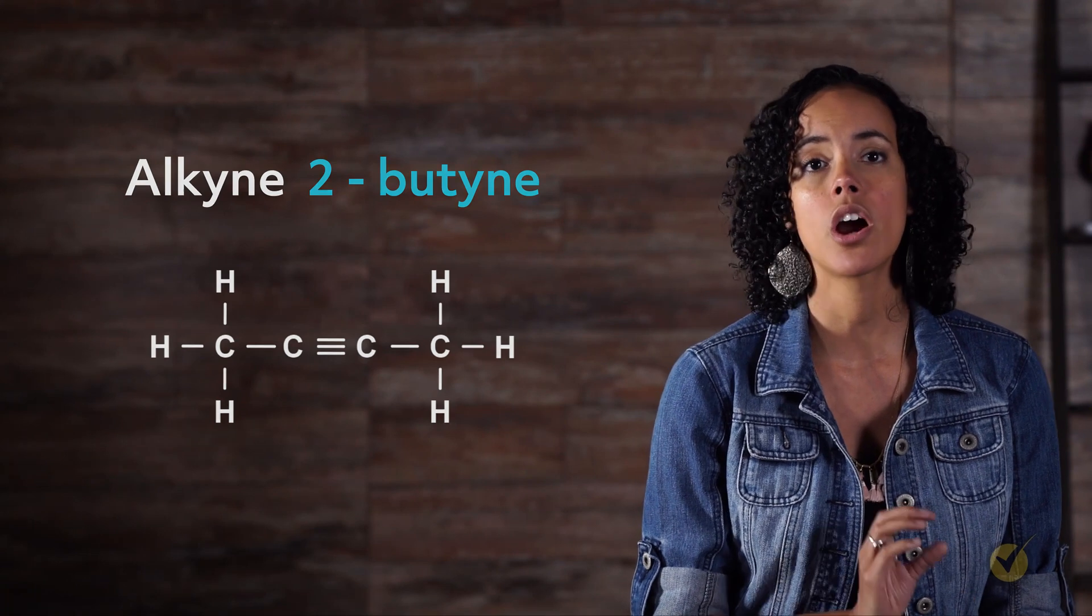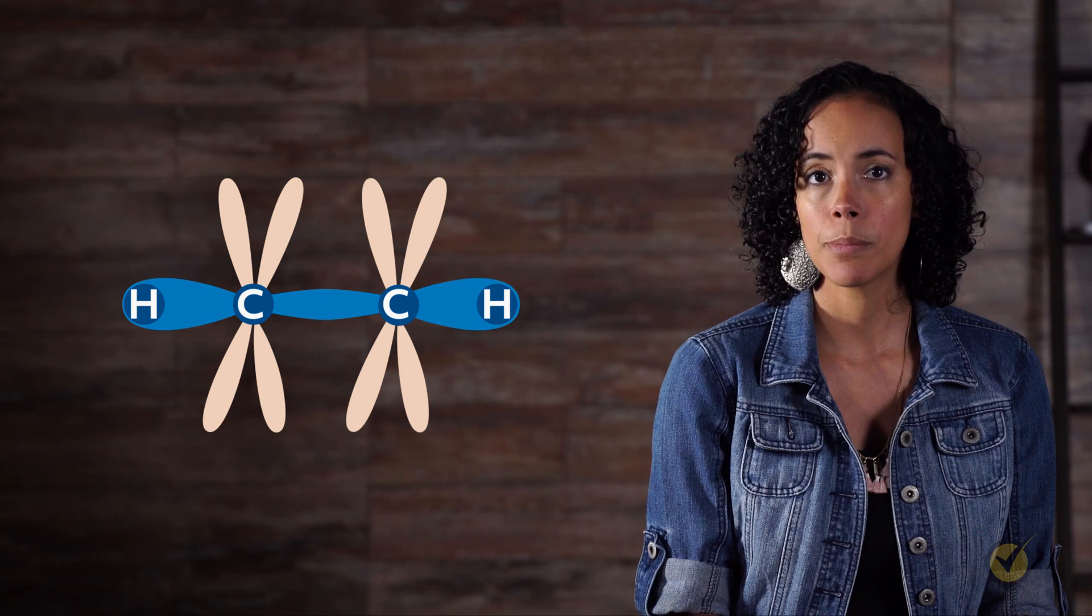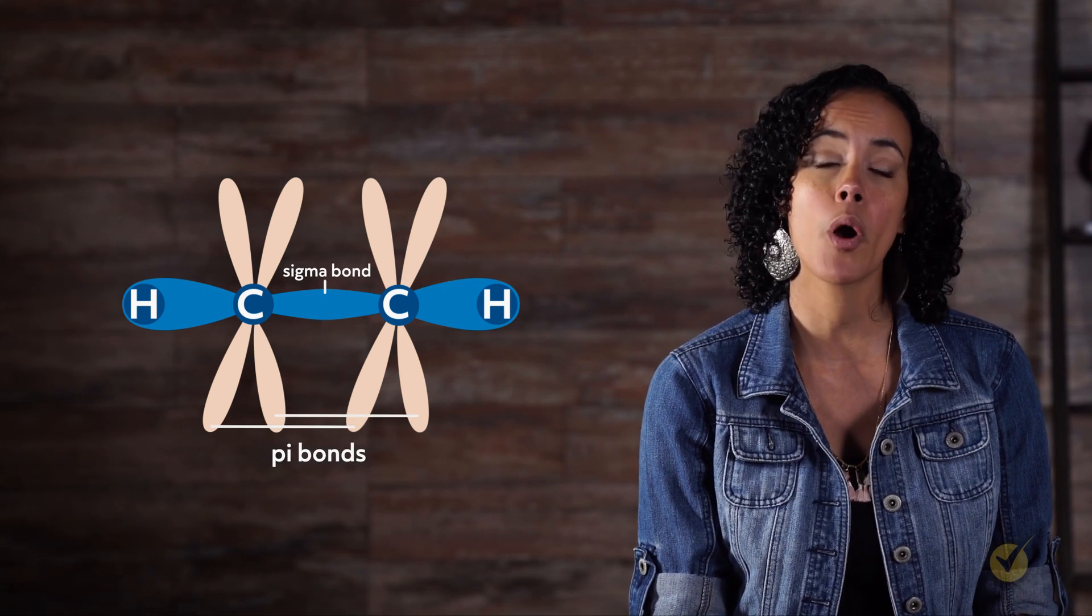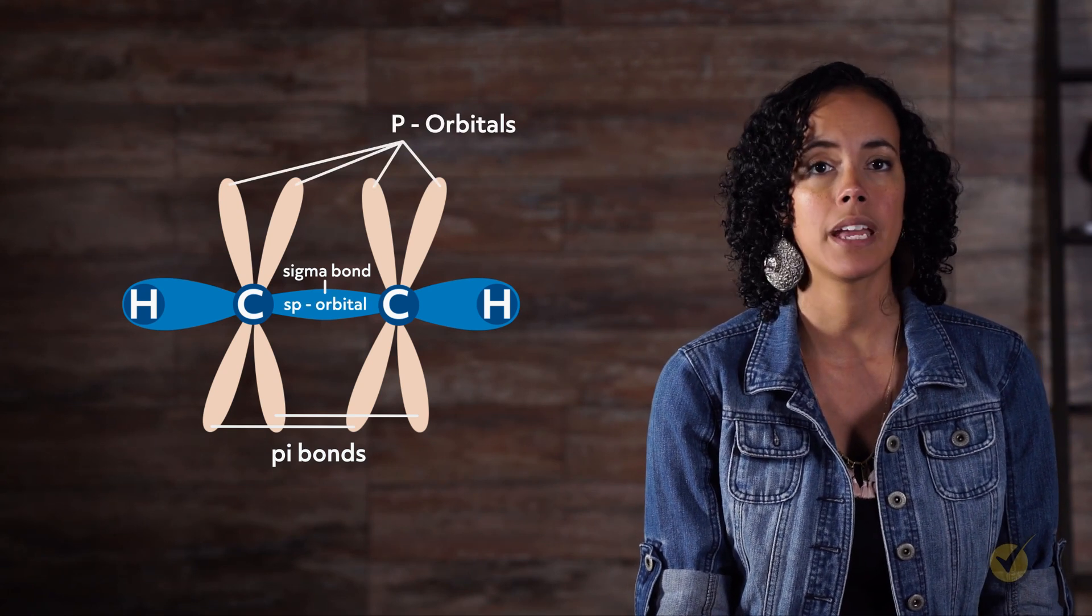The carbons in the triple bond are sp-hybridized and have a linear geometry. The triple bond is made of one sigma bond and two pi bonds. The pi bonds are made from overlapping p orbitals on each carbon, which are required to remain in the same plane.